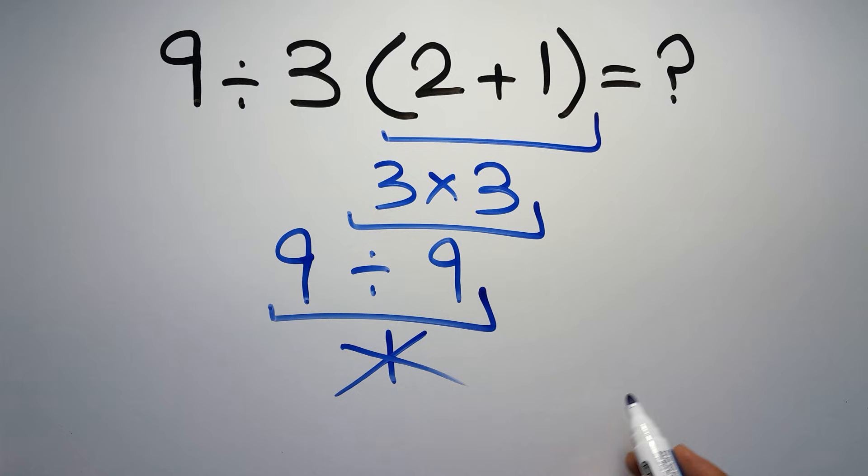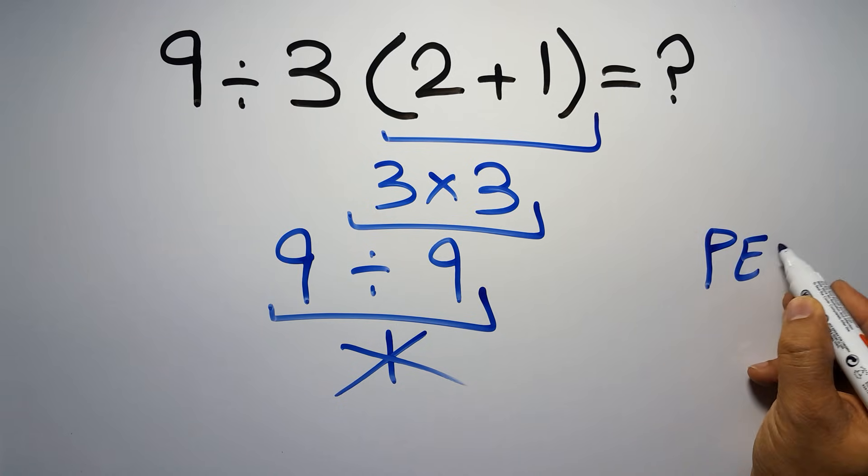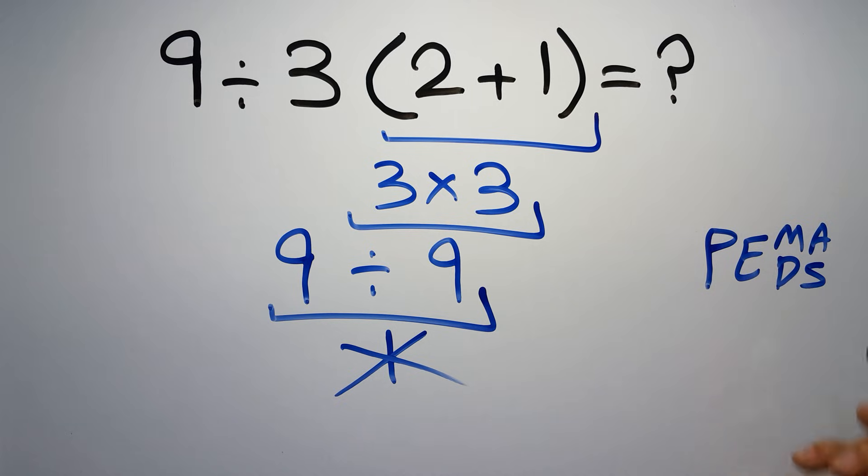Because according to the order of operations, first we have to do parentheses, then exponents, then multiplication or division, and finally addition or subtraction. Remember that multiplication and division have equal priority, and we have to work from left to right, and the same applies to addition and subtraction.